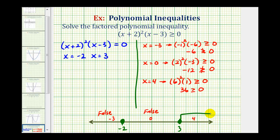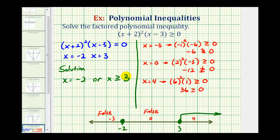So we'll go ahead and graph this. The x values that satisfy this inequality are x = −2 and x ≥ 3. We can express this as x = −2 or x ≥ positive three.